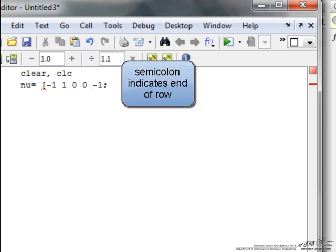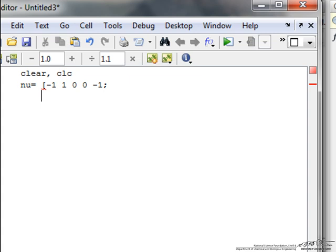I am going to use a space to separate each of the components of the matrix, and then use a semicolon to separate one line, one row of the matrix, so the next row, 0 and a space, 1, 0, and minus 1.